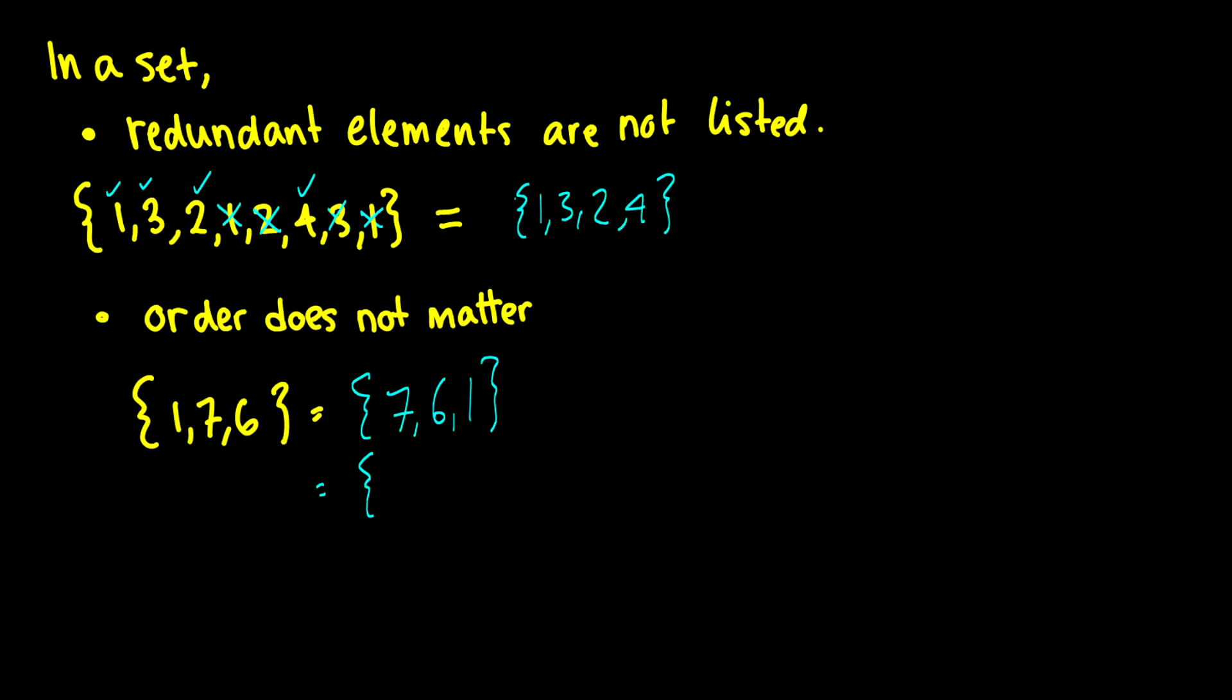We can also rearrange it to be 1, 6, 7, 1, and this is the same set, because 1 is already listed once, so we can list it again, and it's not going to change the set.